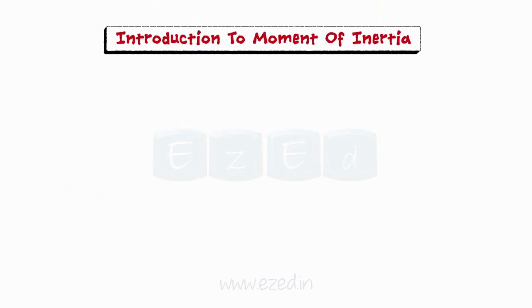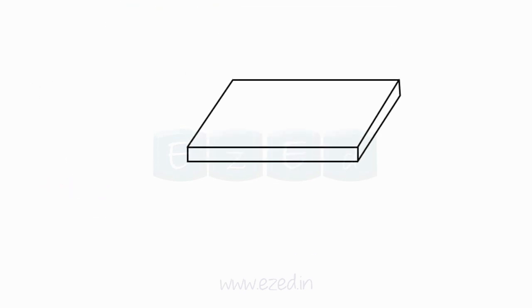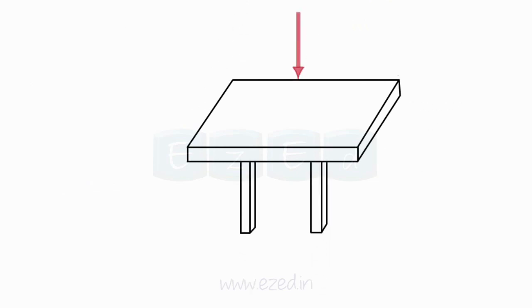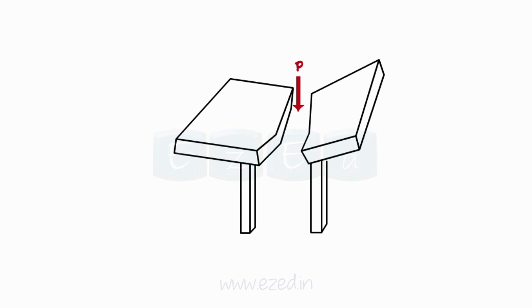Consider the following example. A thin, flat plank of wood is being supported by two supports as shown. The load P is acting at the center of the plank. In this case, the plank may bend or break depending upon the magnitude of the load.